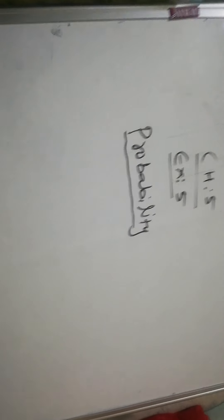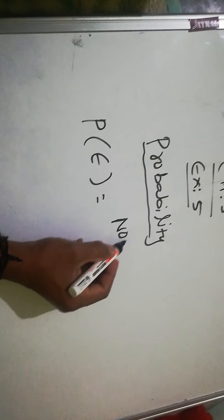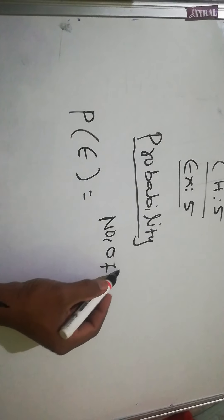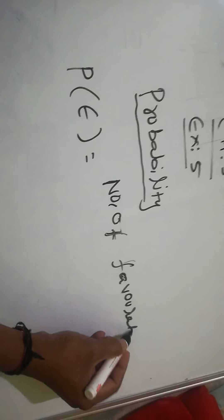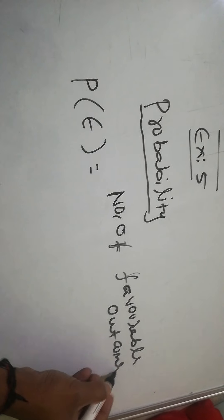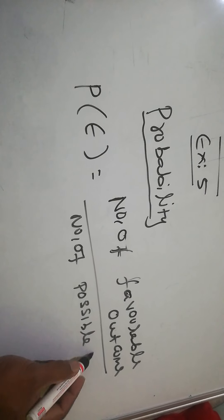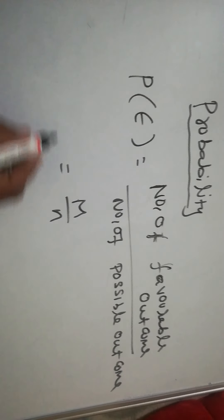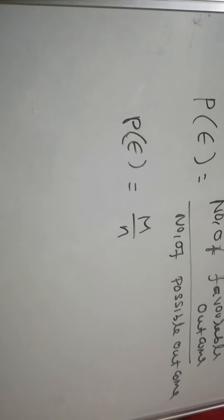Chapter 5, Probability. I'll give the formula first. Probability — you can write P of E, where E is an event. Probability of an event equals the number of favorable outcomes by the number of possible outcomes. In short, we write M by N. So the formula is P of E equal to M by N. We'll use this formula for this exercise.